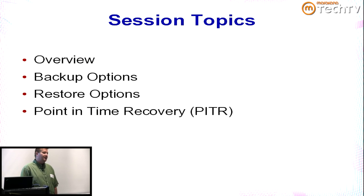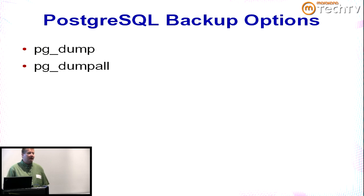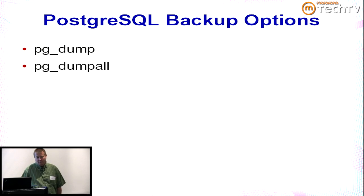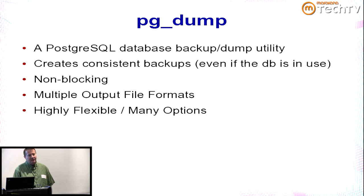The main snapshot-style dump tools that Postgres offers are pg_dump and pg_dumpall. pg_dump is a tool designed to back up a single database with a variety of options. pg_dumpall will dump the entire cluster. pg_dump is a dump utility that creates consistent backups even if the database is in use — it's non-blocking, although it is resource-intensive.